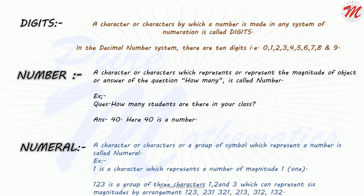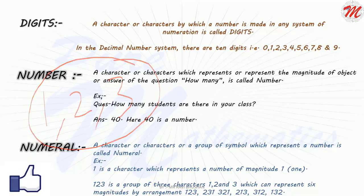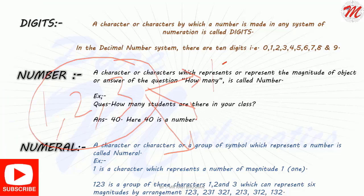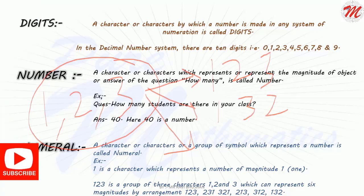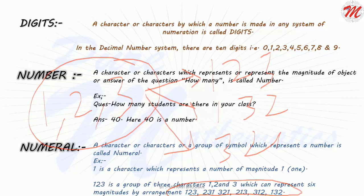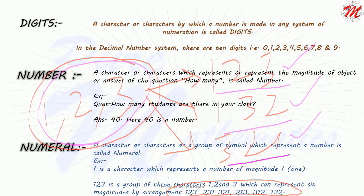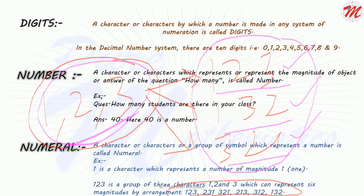Numeral. Numerals are the character or group of characters which can represent a number. Just for example, taking a group of characters 1, 2, and 3 — through this group we can make different numbers such as 123, 132, 321, and others. Through these three characters we are getting different magnitudes: 123, 132, 321, and more. These all are different magnitudes but the group of characters representing them is the same. So the group will be known as a numeral, and the values that can be made from those characters will be known as numbers.